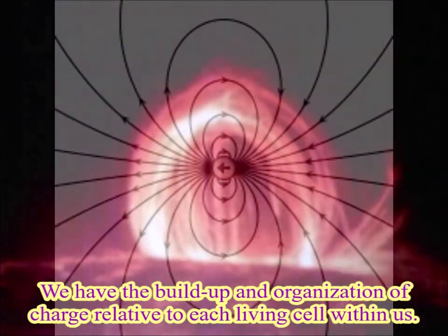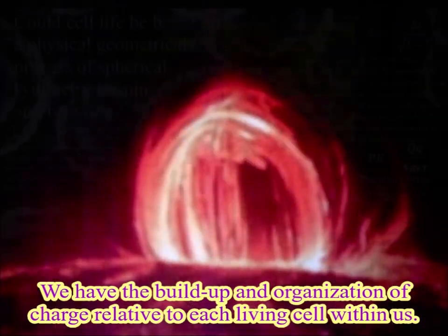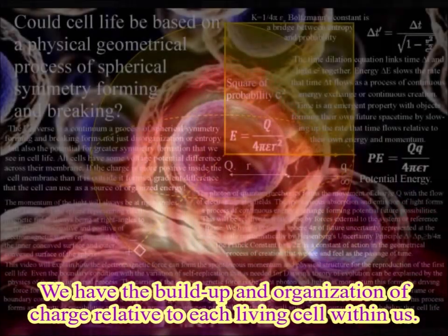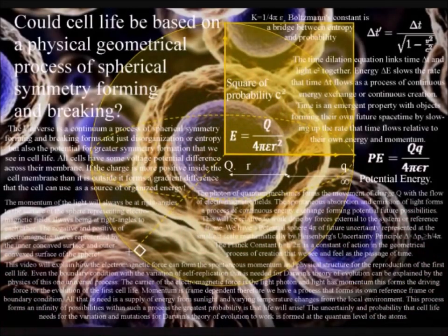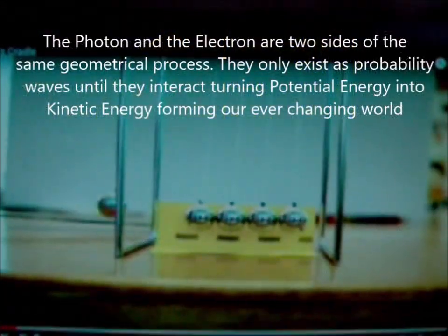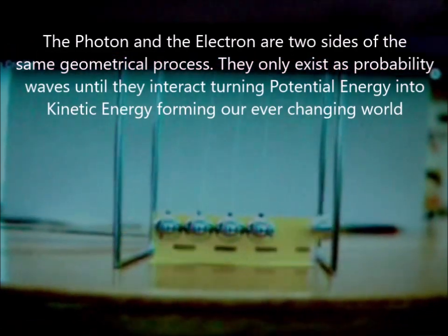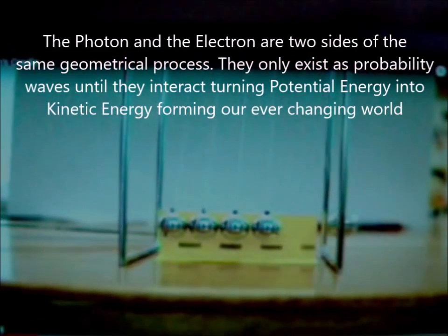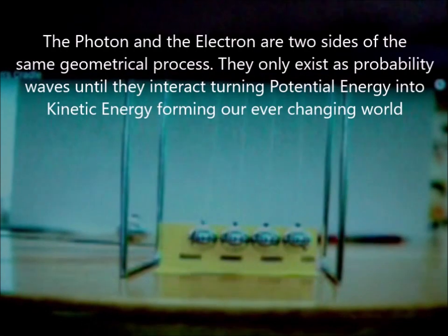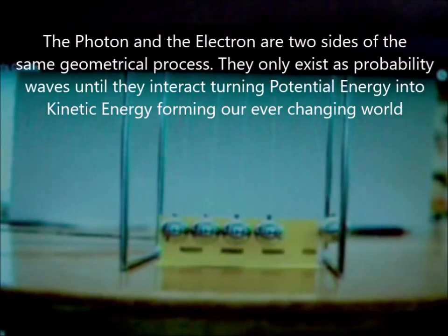Therefore, we can have the same geometrical process on totally different scales with an uncertain probabilistic future that is continuously coming into existence with potential photon energy transforming into the kinetic energy of matter in the form of electrons.